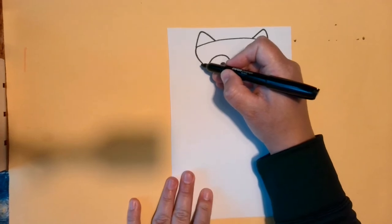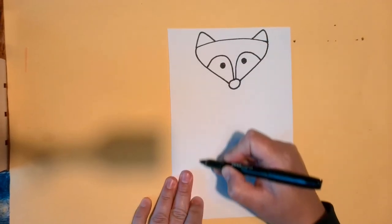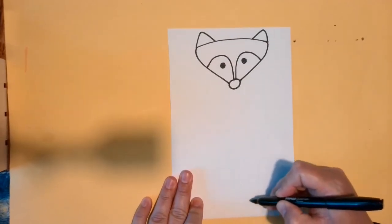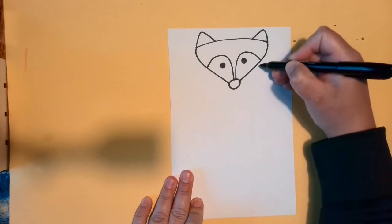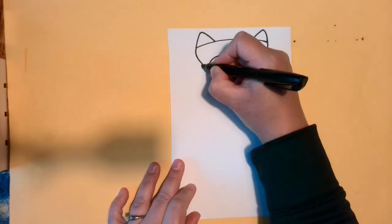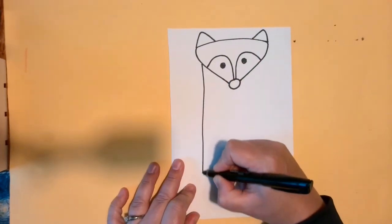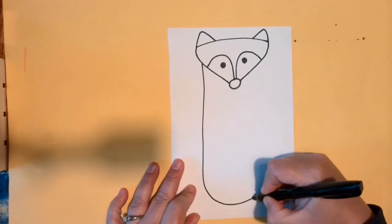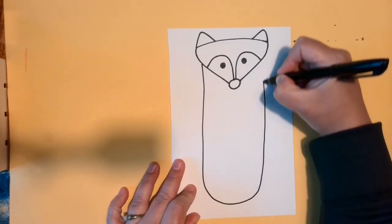Then, I'm going to make the body by curving down almost to the bottom of the page, and all the way back up. So, here I go. I'm going to come down, curve like a U, all the way back up.